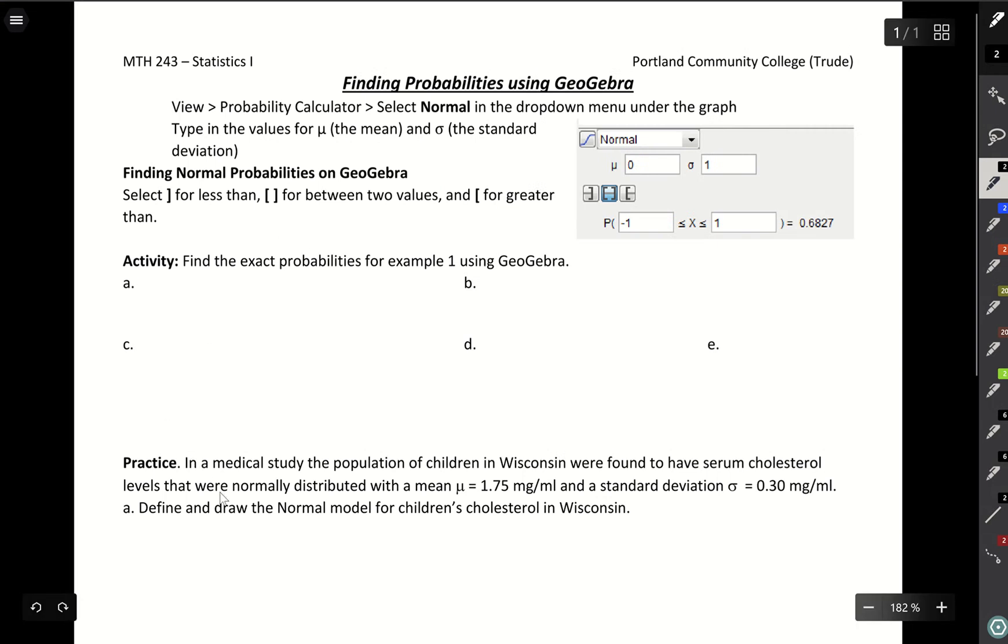When we get into GeoGebra, you'll want to edit that mean and standard deviation if they're different from zero and one. We'll talk about in a future video when we'll use zero and one. It's a specific curve we can use sometimes, but generally with word problems they'll tell you a mean and standard deviation, so you'll need to edit those values. Then you'll need to choose which of these three scenarios: the less than case, between two values, or greater than, which is sometimes also using wording 'at least'.